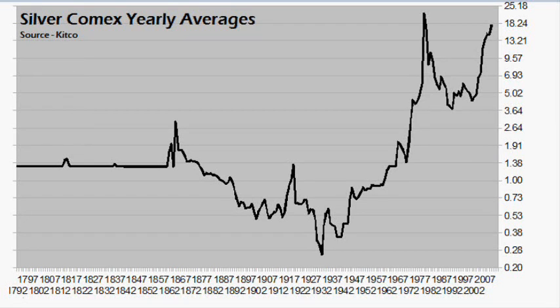Welcome to today's video. In this one we're going to look at silver and inflation. We've seen a lot of inflation over the last century — why is that? We'll give you the answer: it's the Federal Reserve. We'll look more into inflation later on in this video, but for now we're going to start with silver.